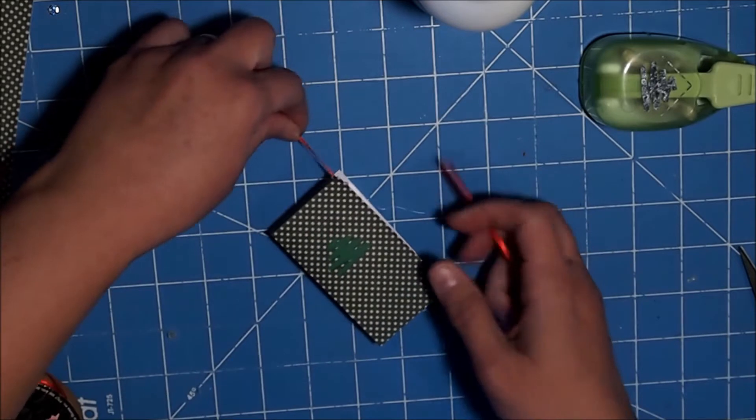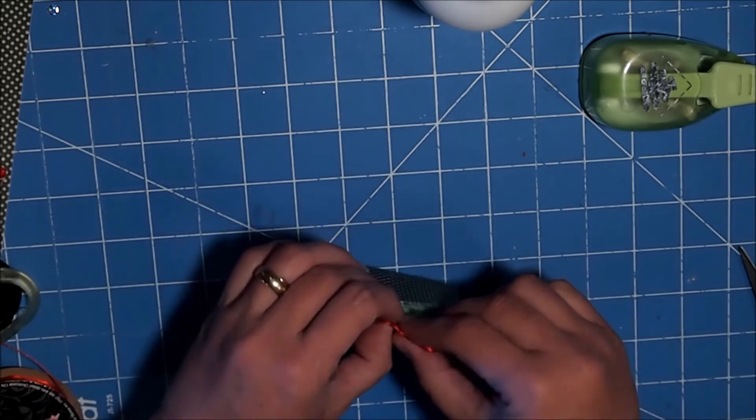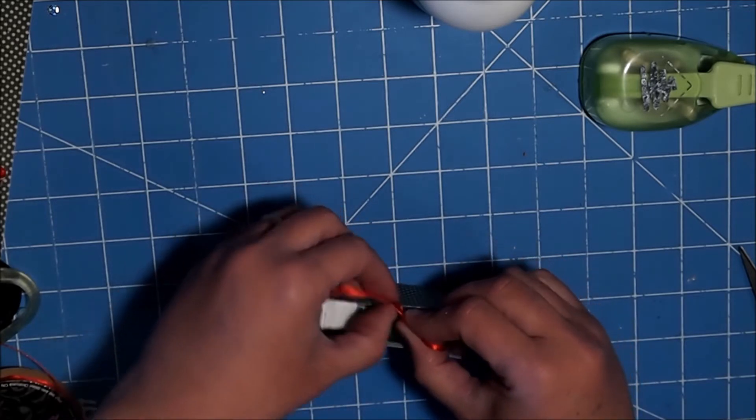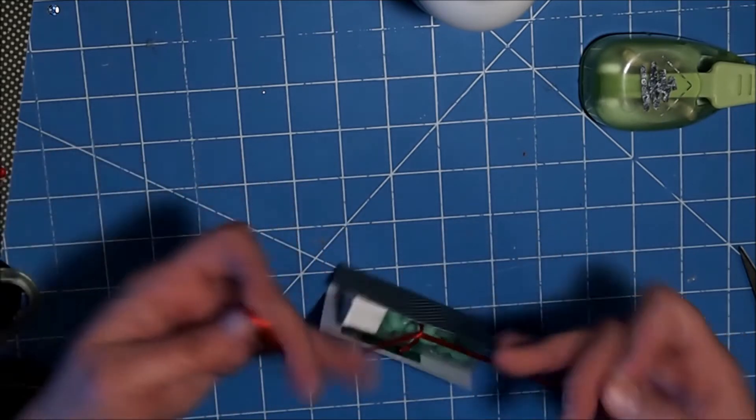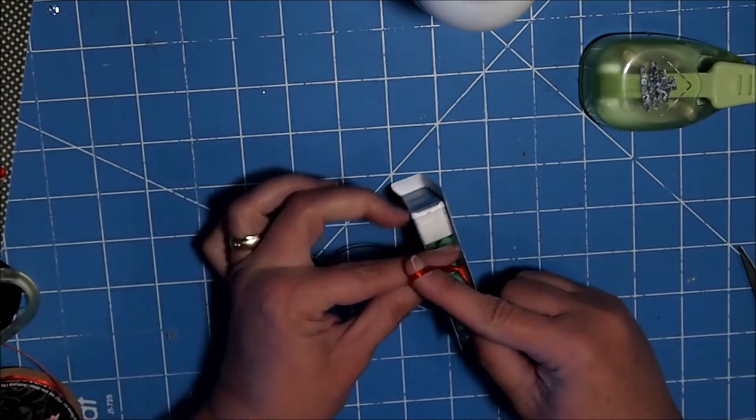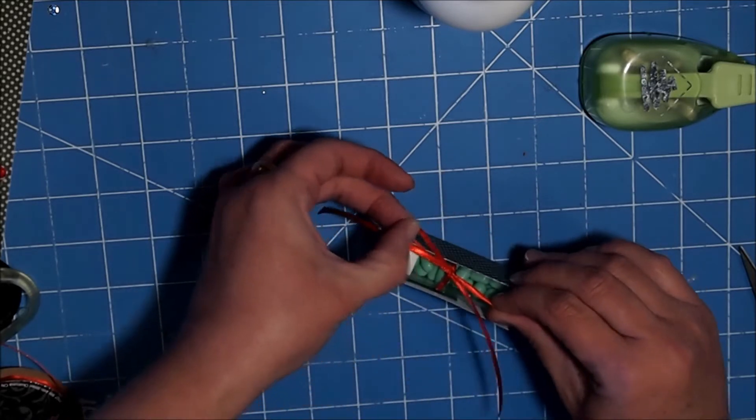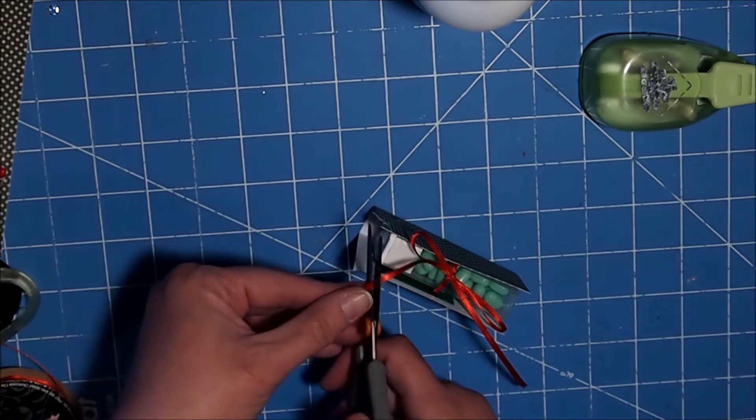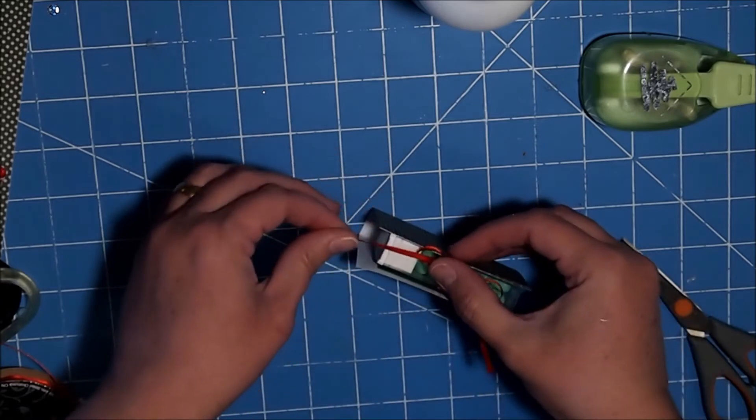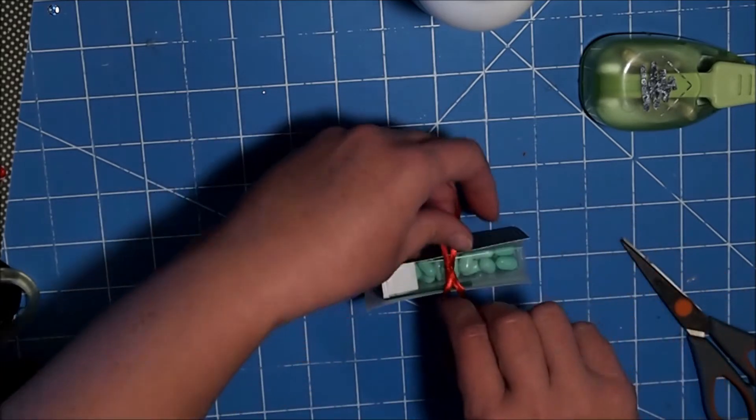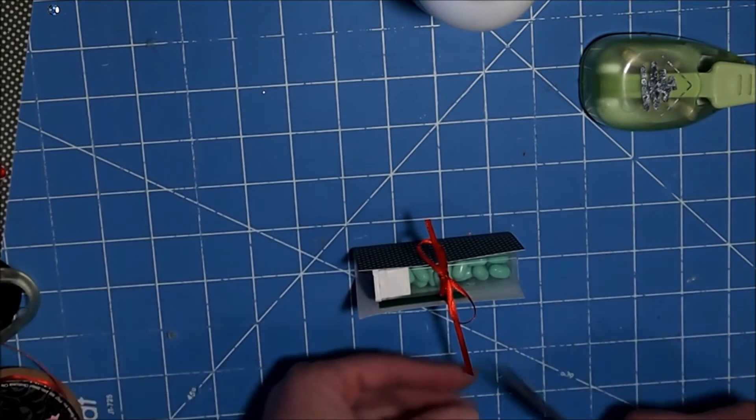And I'm going to tie a little bow. It's not quite tight enough. It's a little too big, I'm just going to make it a little bit smaller. Isn't that cute? It's just a simple, you know, just something simple to dress it up just a touch.